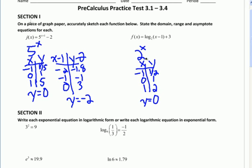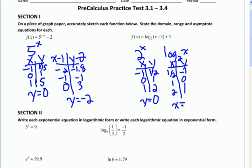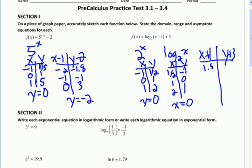Now I'm going to go to the parent function, which is the inverse of 2 to the x, which is log base 2 of x. All I'm going to do is take all this parent information and interchange x and y. So this will become 1 half, negative 1 — then 1, 0 — then 2, and 1. And instead of having a horizontal asymptote at y equals 0, I'll have a vertical asymptote at x equals 0. Then I'll do my transformations: x plus 1 and y plus 3. I'll get 1.5, 2, and 3 for x, and negative 2, 3, and 4 for y. Because I'm transforming a vertical asymptote, I plug into x: 0 plus 1 is 1, so the vertical asymptote is x equals 1.